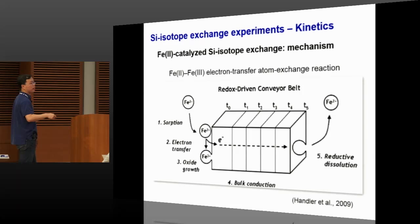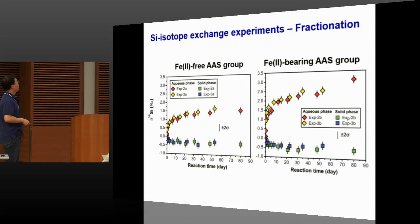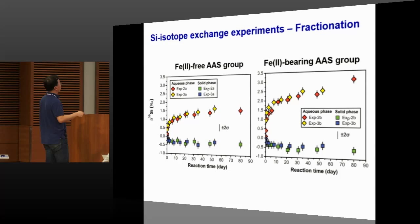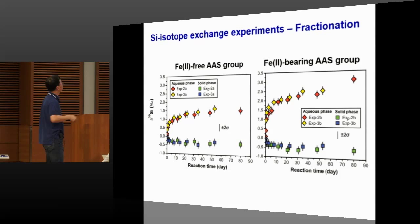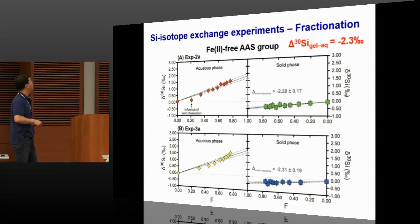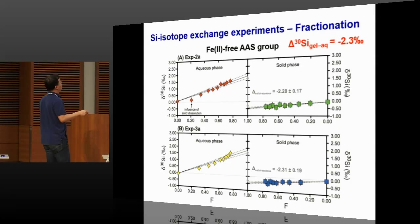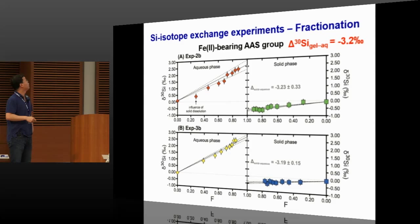We can also look at the natural fractionation between the solid and the aqueous by examining delta silicon 30 values. Warm colors indicate data from the aqueous and cold colors from the solid. From both experiments, we can see the heavy silicon isotope preferentially goes to the aqueous, and the light silicon isotope preferentially goes to the solid, and the two curves diverge — indicating fractionation between the two components. Extrapolating the partially exchanged data to 100% exchange gives the fractionation factor: for the experiment without ferrous iron, we got a fractionation factor of about minus 2.3 per mil; for the experiment containing Fe2+, we got a slightly larger fractionation factor of about minus 3.2 per mil.